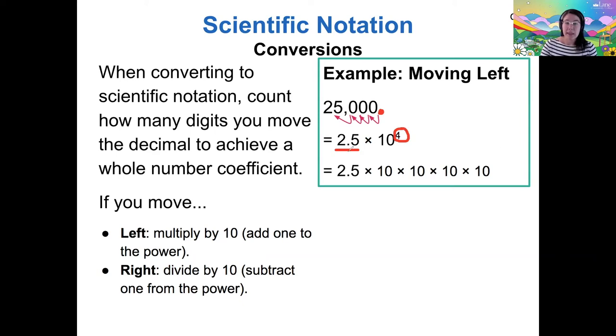And all this is saying is that this number in scientific notation is equal to that prefactor 2.5 times 10 the number of times that it has the power. So one, two, three, four factors of 10.